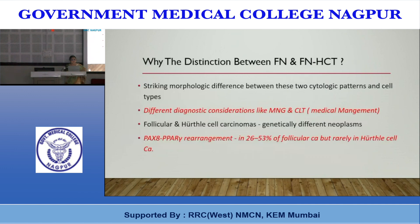Why distinguish between follicular neoplasm and follicular neoplasm Hürthle cell type? First, there are striking morphologic differences between the two cytologic patterns. Second, totally different diagnostic considerations arise — Hürthle cells suggest MNG or CLT requiring medical treatment, whereas abundant follicular cells raise suspicion of follicular neoplasm with malignancy possibilities. Third, they are genetically different: the PAX8-PPARγ rearrangement is seen in 26–53% of follicular carcinomas but rarely in Hürthle cell carcinoma.